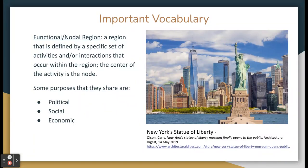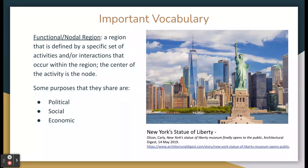To continue, a functional region, also known as a nodal region, is a region that is defined by a specific set of activities and/or interactions that occur within the region. The center of the activity is known as the node. The nodes sometimes share a purpose that could be political, social, or economic.